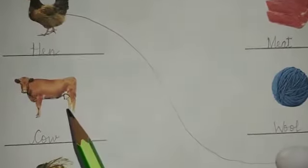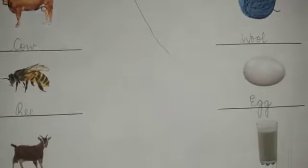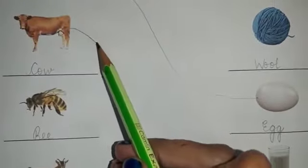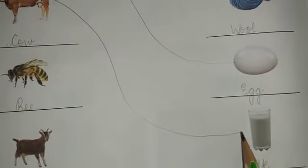Now, the next one is cow. What does cow give us? Cow gives us milk. So, we are going to match the picture of cow with the picture of milk.